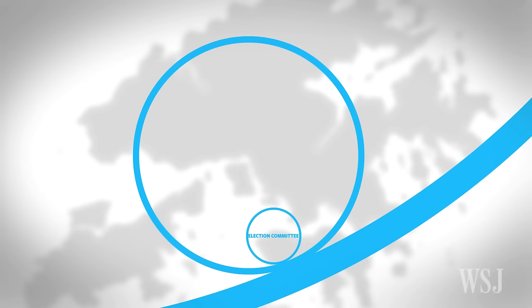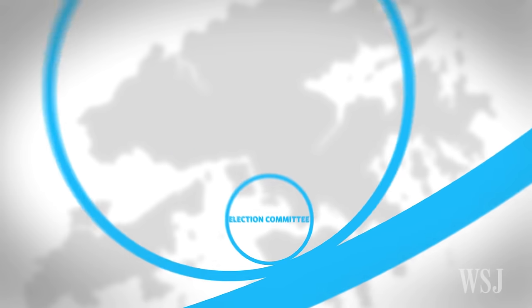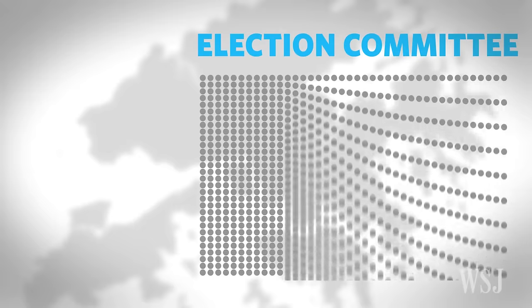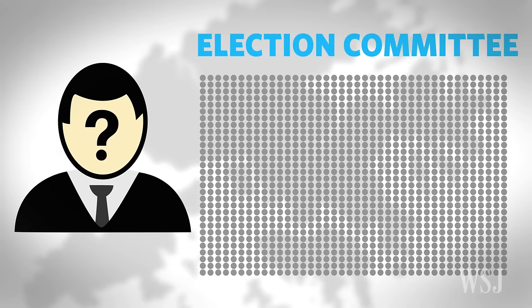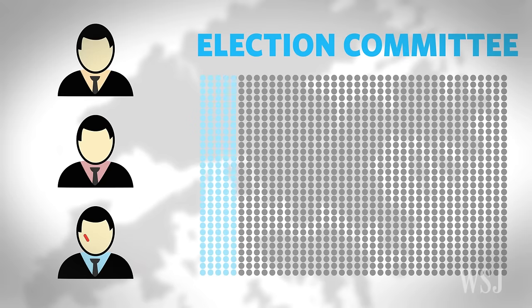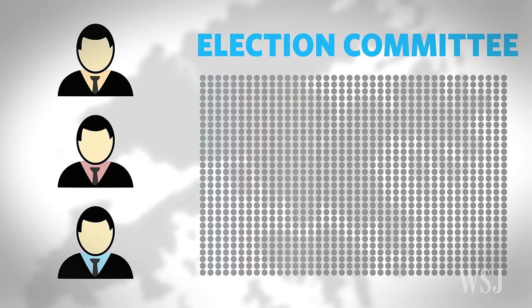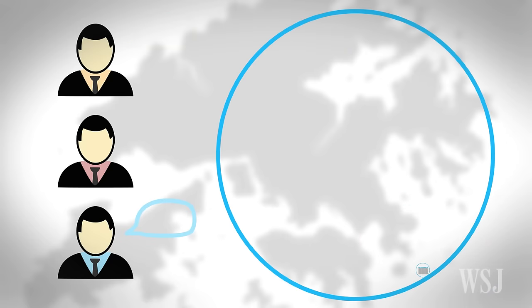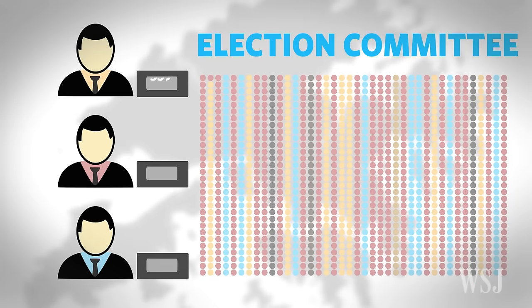In 2016, about 3% of the total population were registered to vote for the 1,200 people committee. Once chosen, the committee then puts forward candidates for the chief executive. A valid candidate has to gain at least 150 nominations. And in previous elections, the candidates go head-to-head in a series of TV debates. But although they're broadcast to the whole population, on election day it's only members of the committee that can cast their votes.